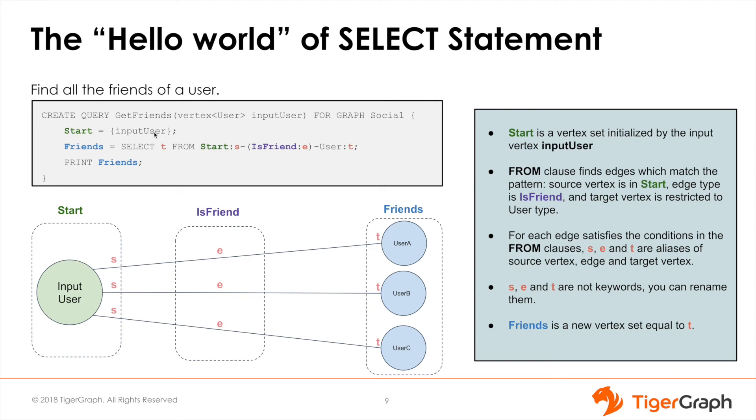We only traverse the edges of type is_friend and we will store the target vertices of type user into our vertex set Friends. Once they have been stored we can print them out.